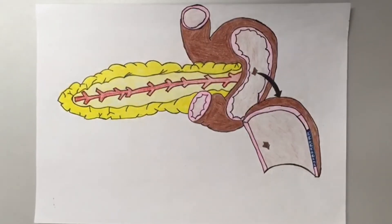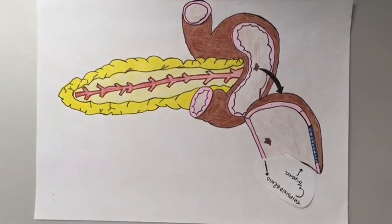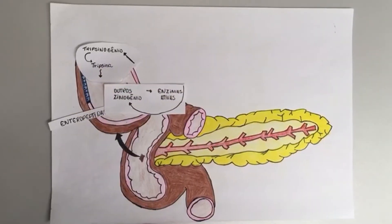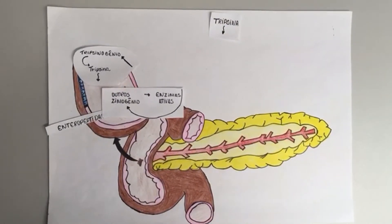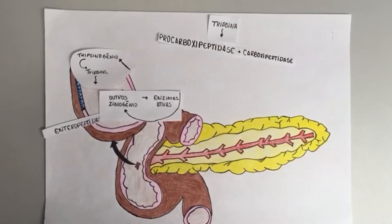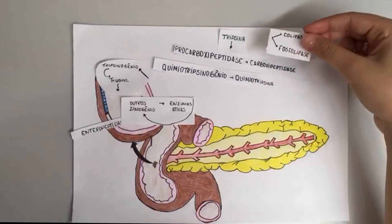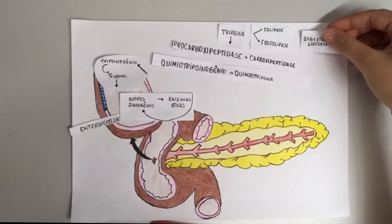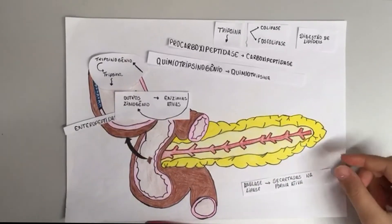Dentro do duodeno, o tripsinogênio é transformado em tripsina pela enteropeptidase, uma protease intestinal da borda em escova. A tripsina, por sua vez, transforma outras duas proteases pancreáticas, procarboxipeptidase e quimotripsinogênio, em suas formas ativas: carboxipeptidase e quimiotripsina. A tripsina também ativa a colipase e a fosfolipase, enzimas que auxiliam na digestão de lipídios. Outras enzimas pancreáticas, como a amilase e a lipase, são secretadas na sua forma ativa.